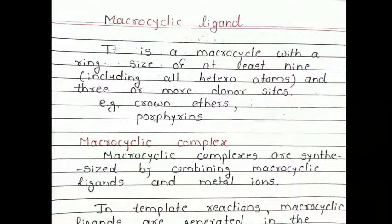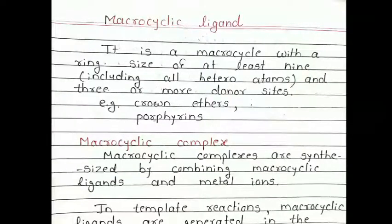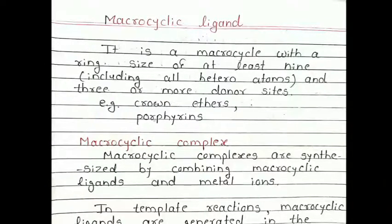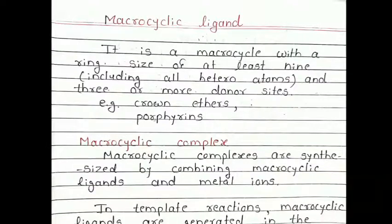What is a macrocyclic ligand? It is a macrocycle — a big cycle or mega cycle — with a ring size of at least 9 atoms and 3 or more donor sites. Macrocyclic consists of a ring, and the ring size depends on the atoms present.